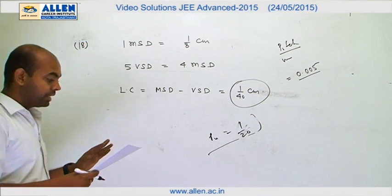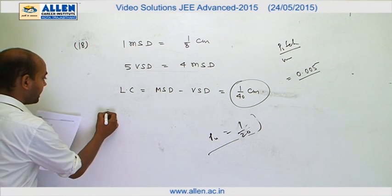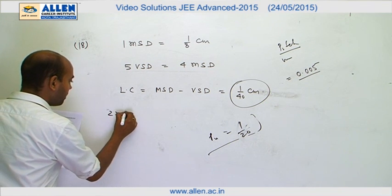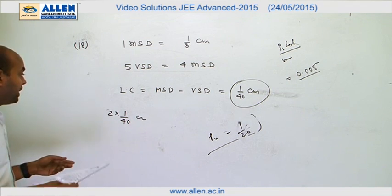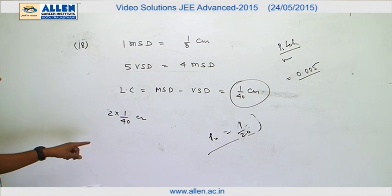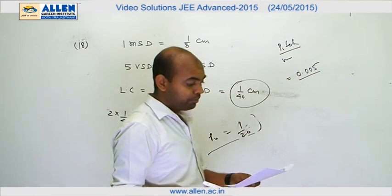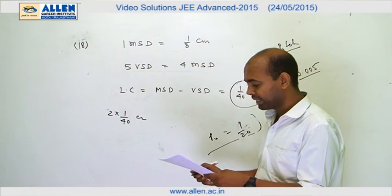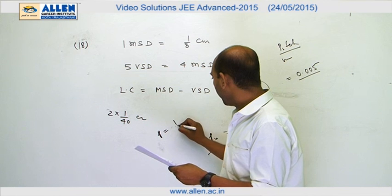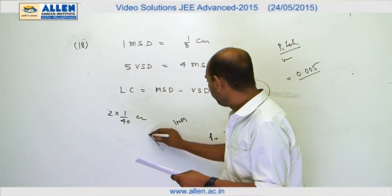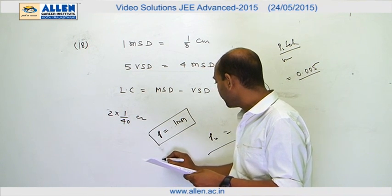For options C and D, the least count of the linear scale of the screw gauge is twice the main scale division, which is 2 × 1/40 centimeter. The pitch will be twice of this because one circular rotation moves two linear scale divisions, so pitch comes out to 1 mm.